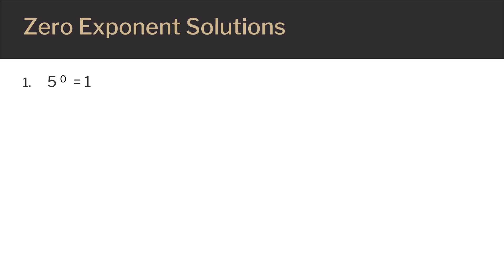Here are the solutions. Five is raised to the zero power. Since any number raised to zero equals one, five to the zero power equals one. For the second problem, we use the quotient rule: seven to the fourth power divided by seven to the fourth power equals seven to the four minus four power. Four minus four equals zero, so seven to the zero power equals one.